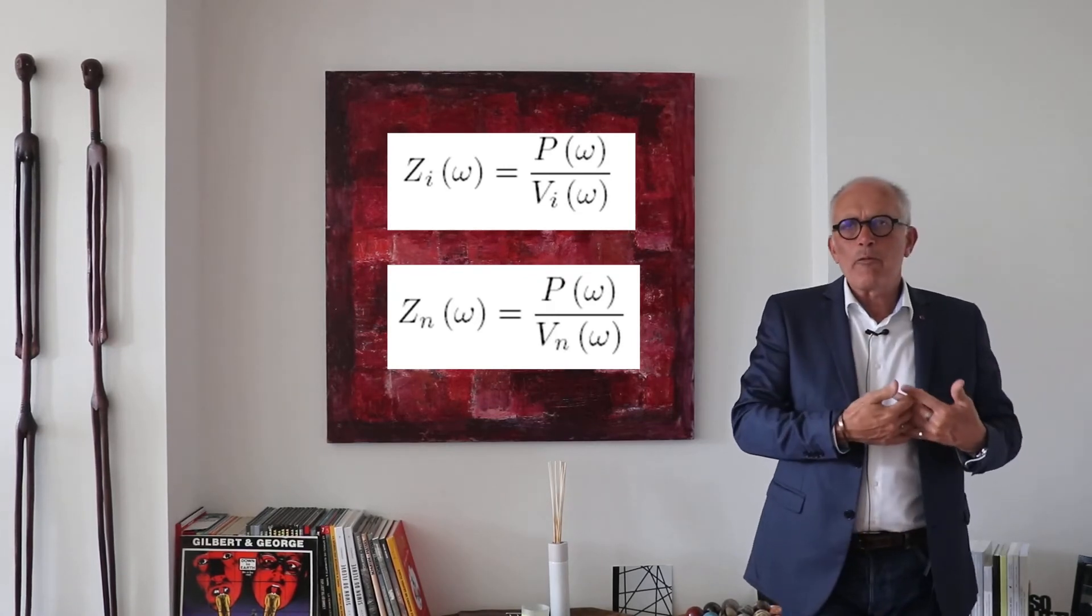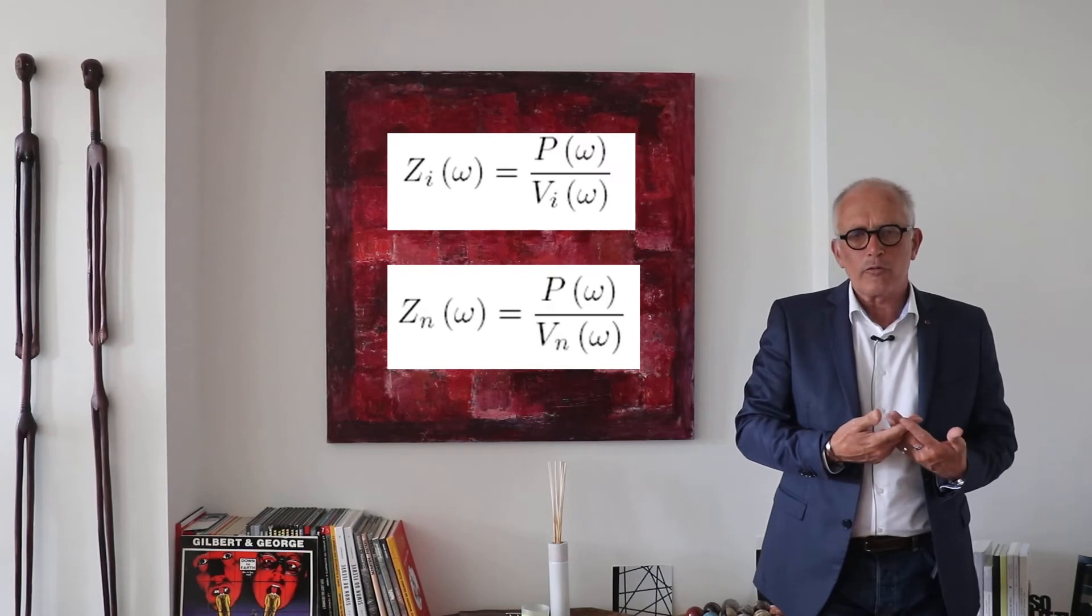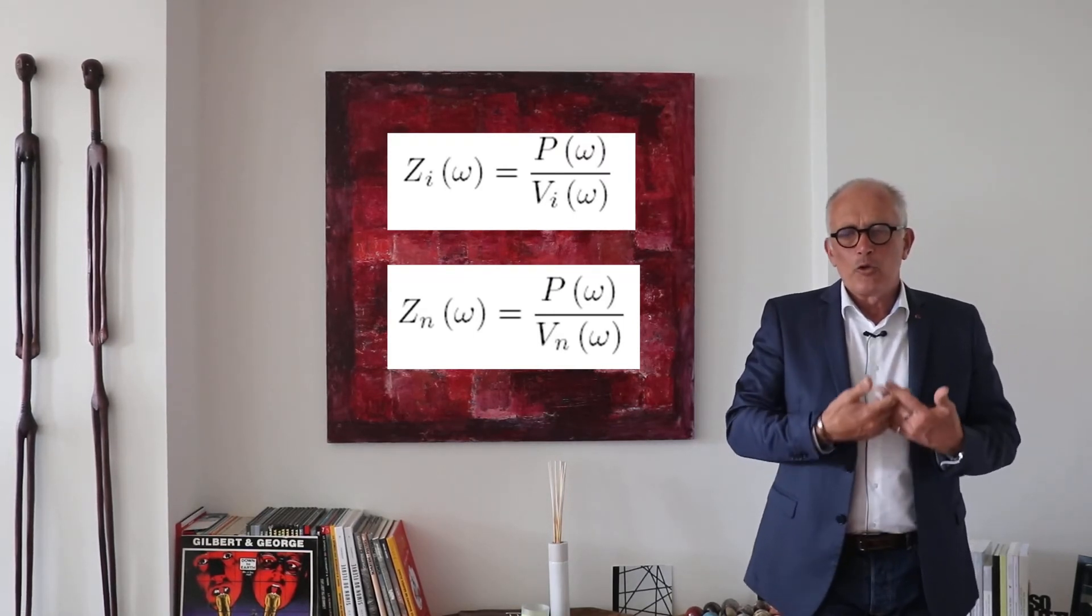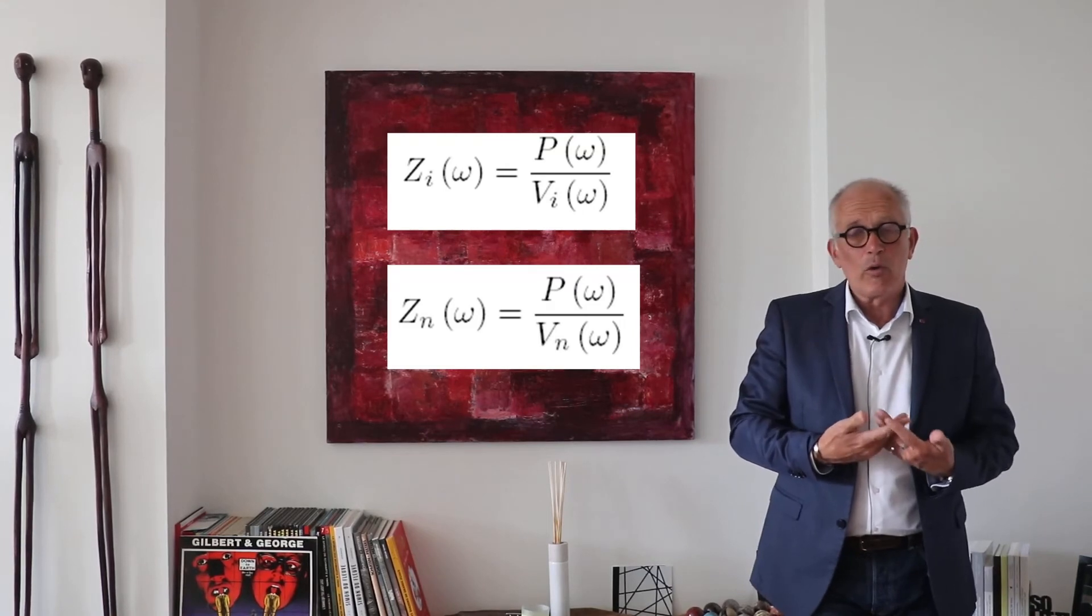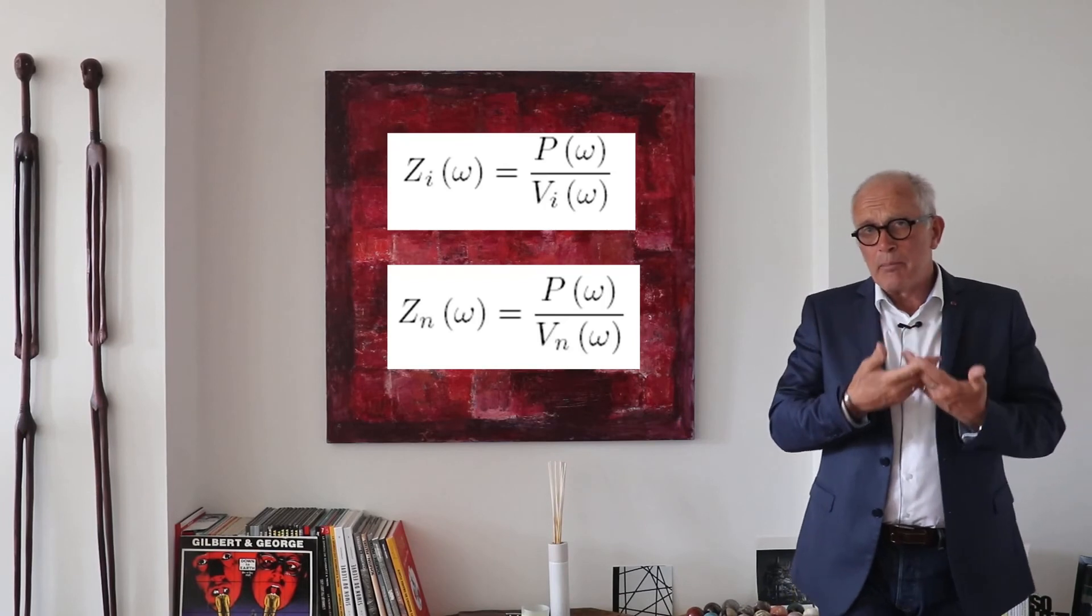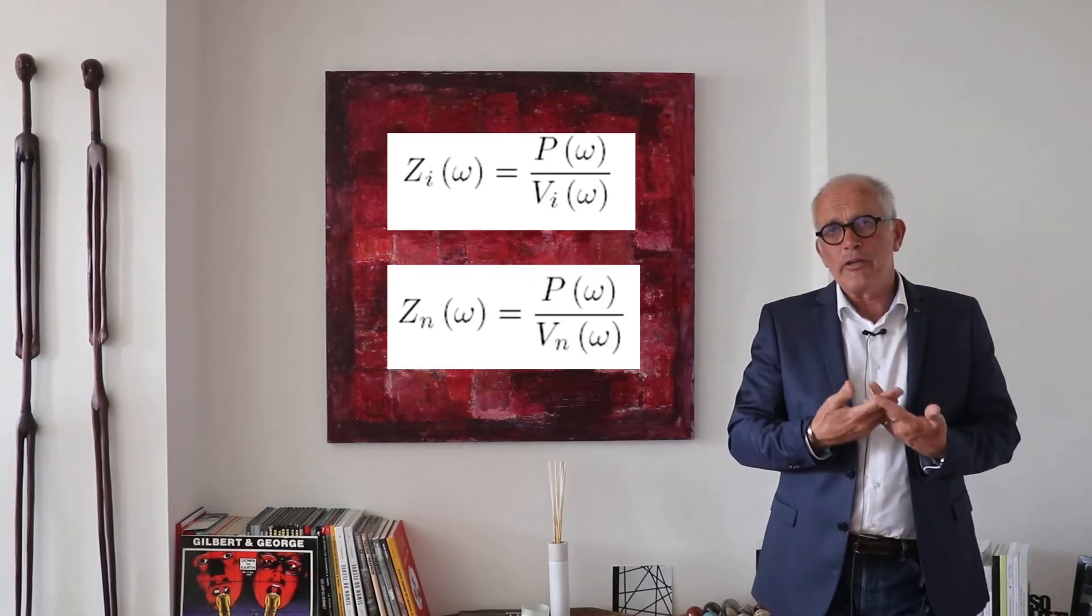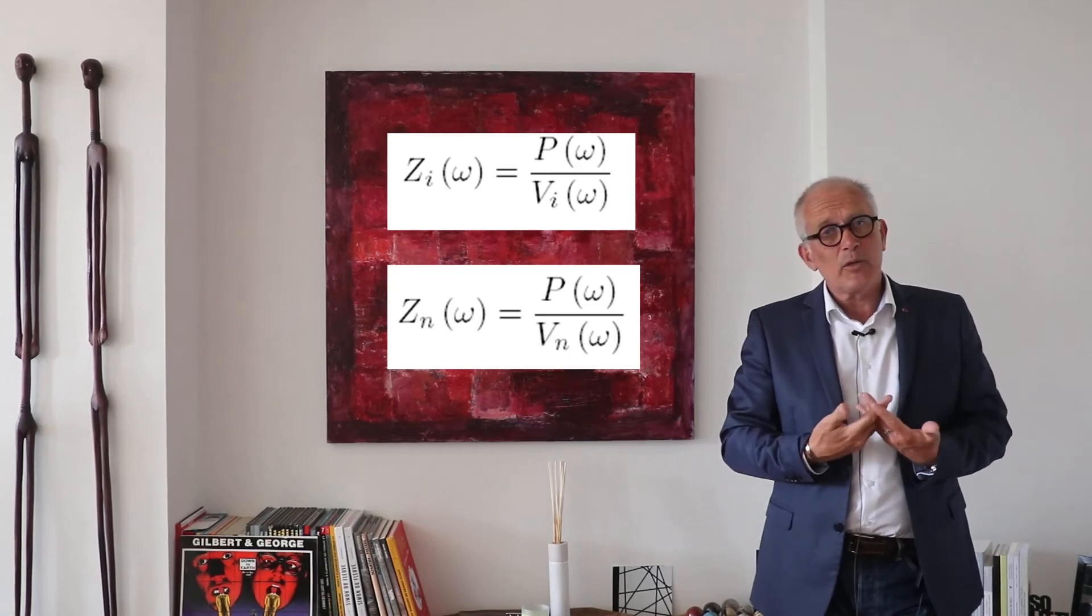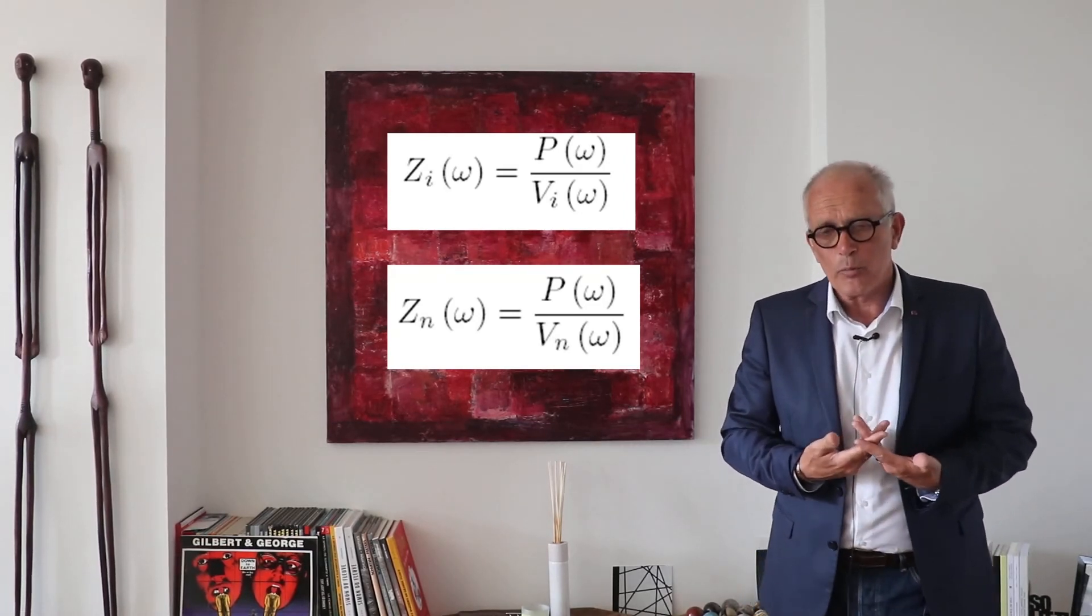Alternatively, if you have a perfectly soft surface, totally unable to resist to the pressure, the pressure is going to be zero and the velocity is going to be, well, what it is. And so the impedance on such a perfectly flexible surface is pressure over velocity and because pressure is zero, it's going to be zero.